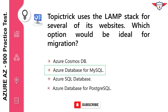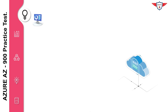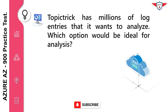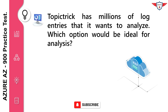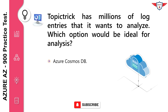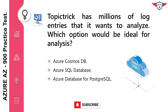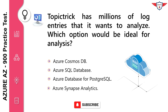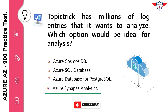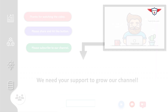Topic Trick has millions of log entries that it wants to analyze. Which option would be ideal for analysis? Azure Cosmos DB, Azure SQL Database, Azure Database for PostgreSQL, Azure Synapse Analytics. The correct answer is Azure Synapse Analytics. Azure Synapse Analytics is the logical choice for analyzing large volumes of data.